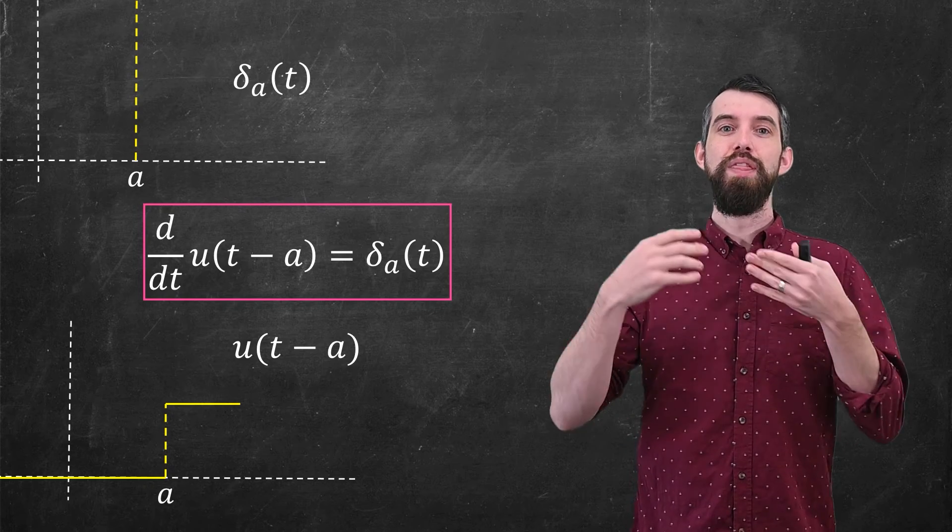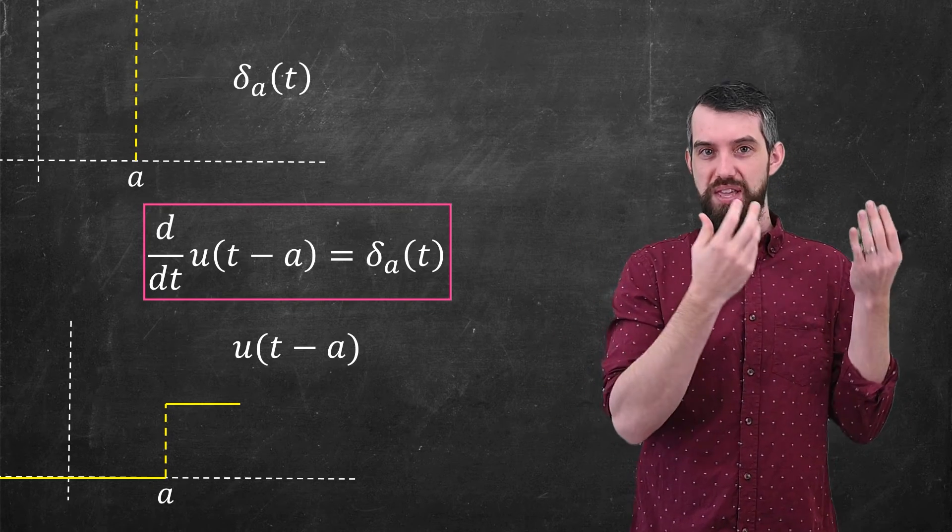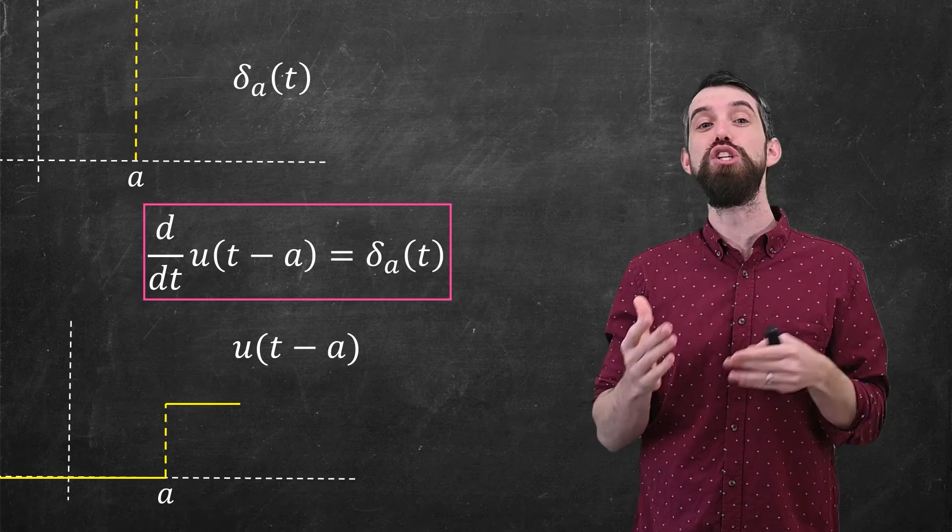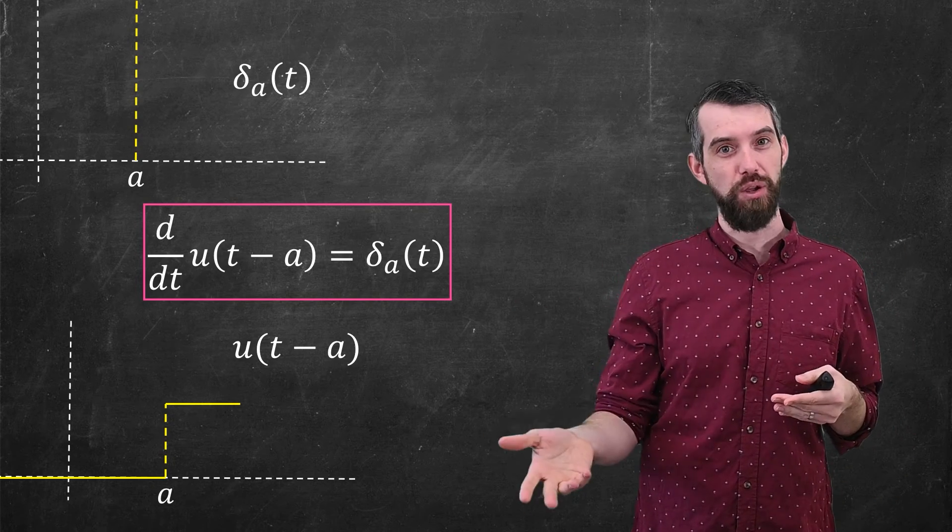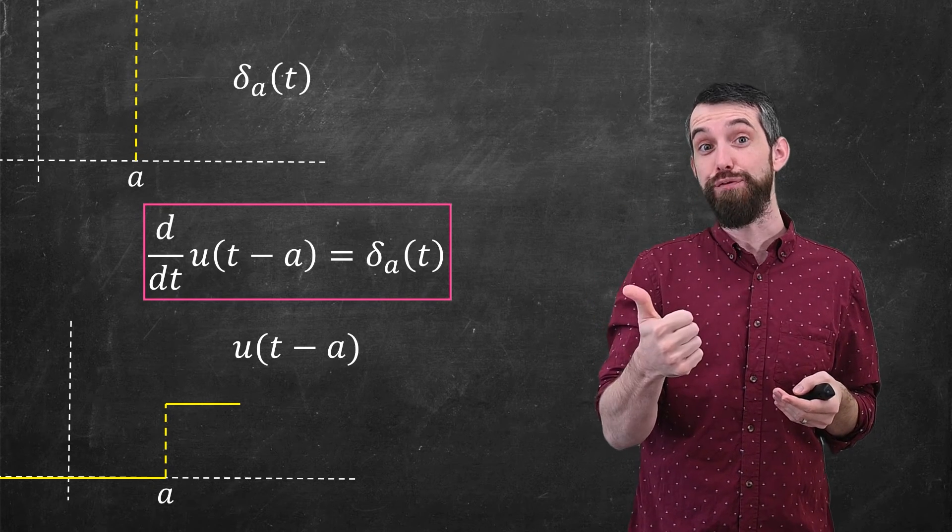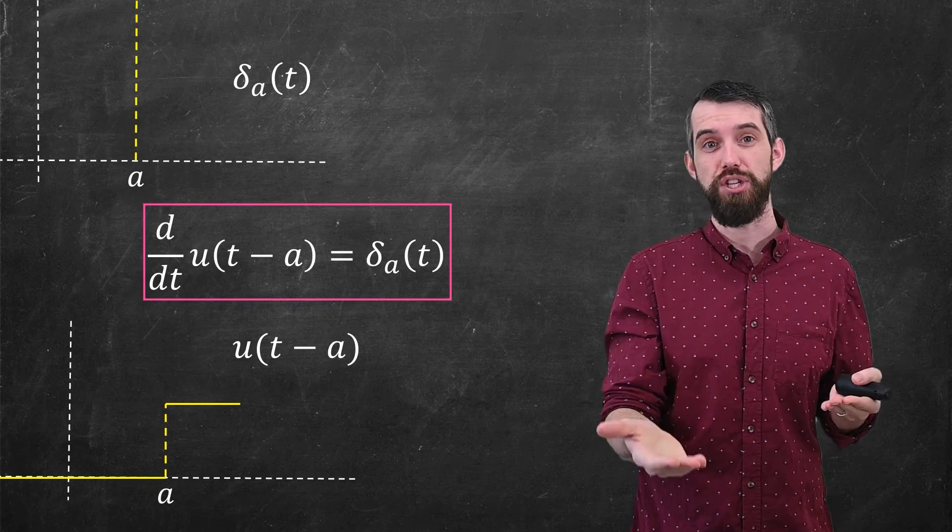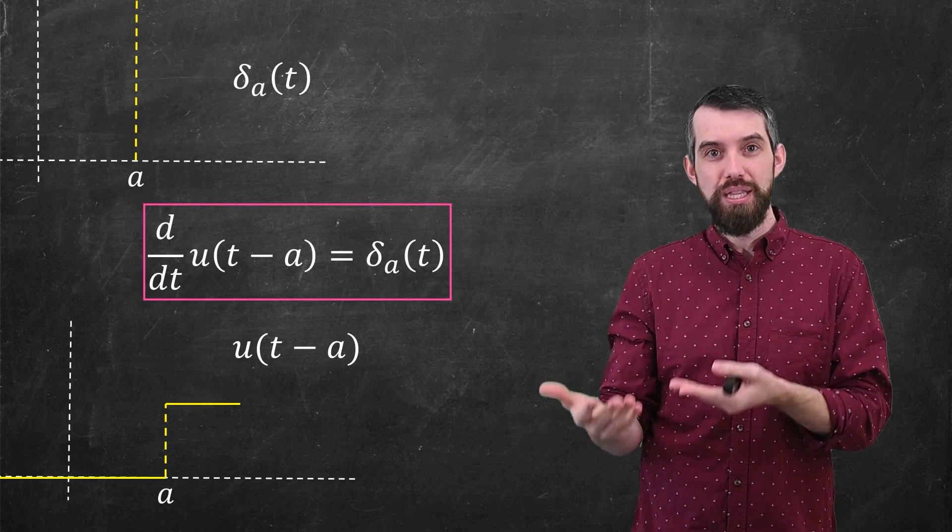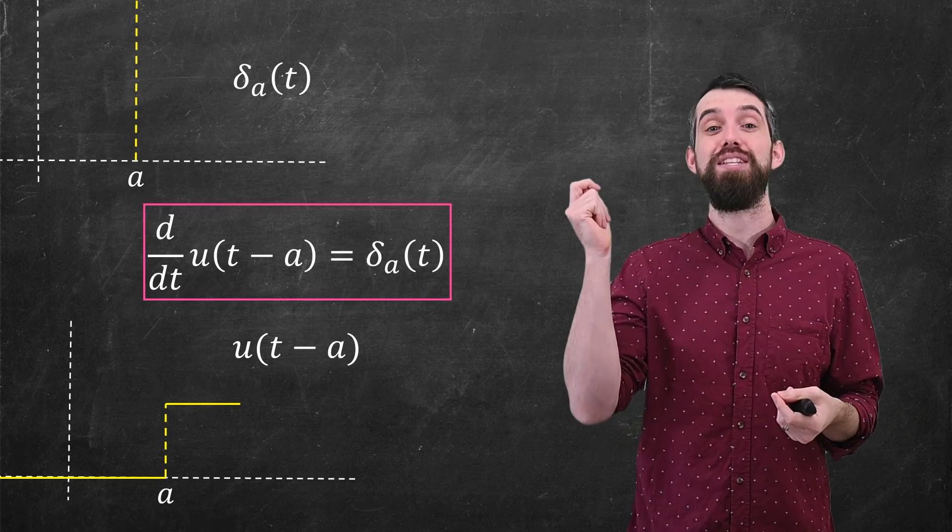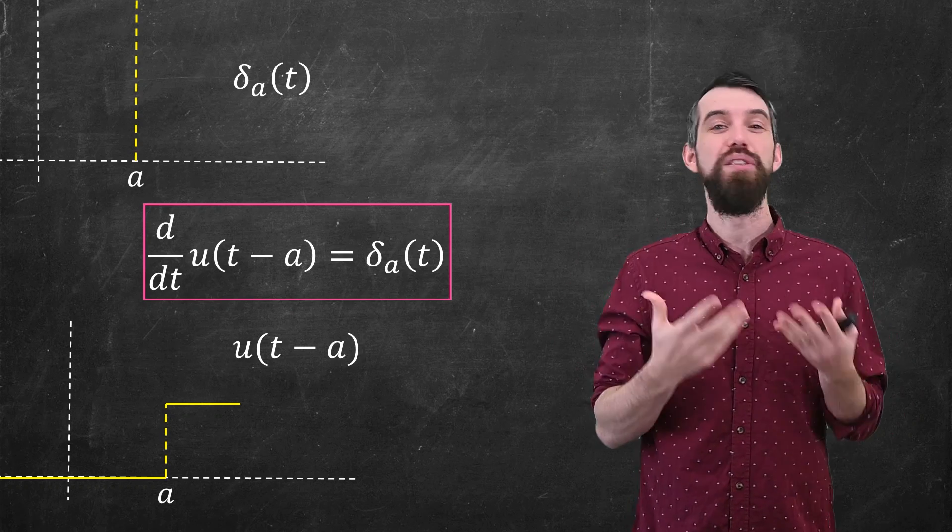All right. So that was the delta function or the impulse function. We've now studied a few of its properties. In the next video, I actually want to use it to solve differential equations. And so in particular, we're going to figure out what is the Laplace transform of this particular delta function. And then we will use that Laplace transform to help solve differential equations that involve an impact, like hitting the system with a hammer. And then we'll see you next time.